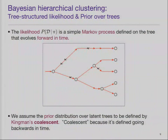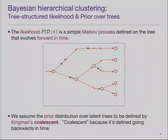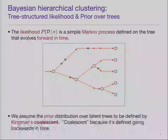In more detail about the model structure: we use a tree-structured likelihood and prior over trees. The likelihood is a Markov process defined on the tree that evolves forward in time. Given a tree with data on the leaves, we generate data by starting at the root, going toward the leaves along branches, running a Markov process that transitions data points along the branches to different types. The prior we assume is Kingman's Coalescent.